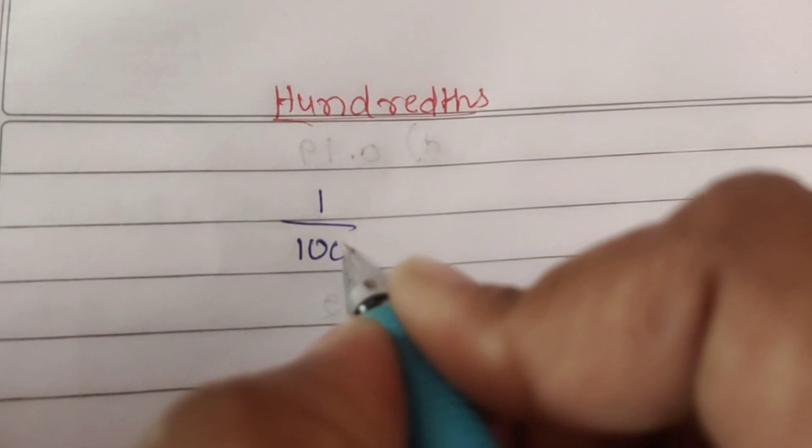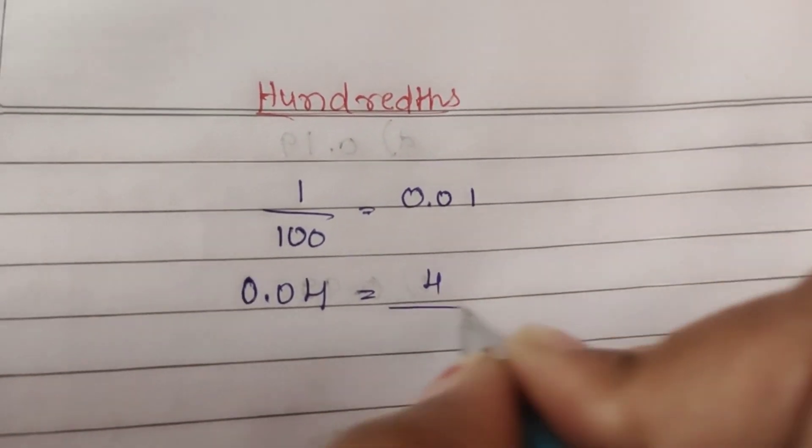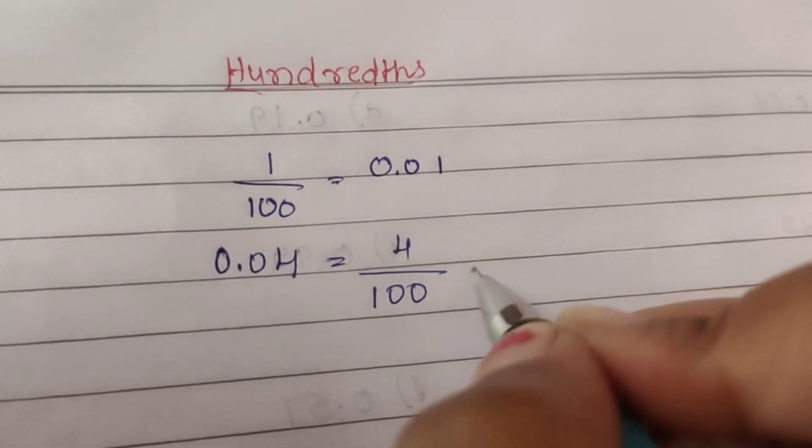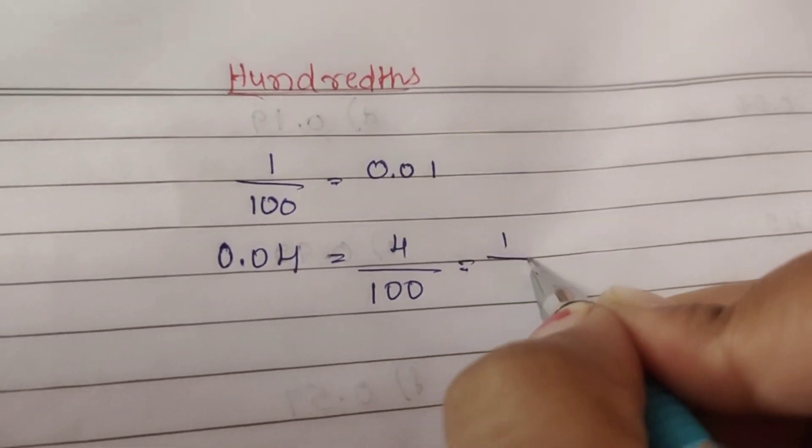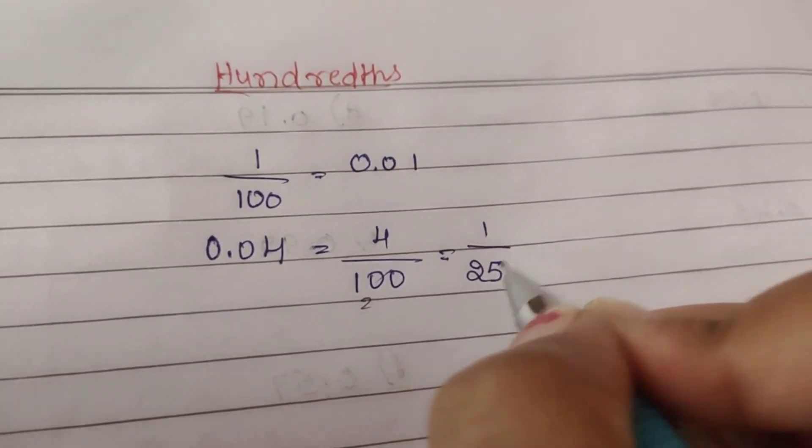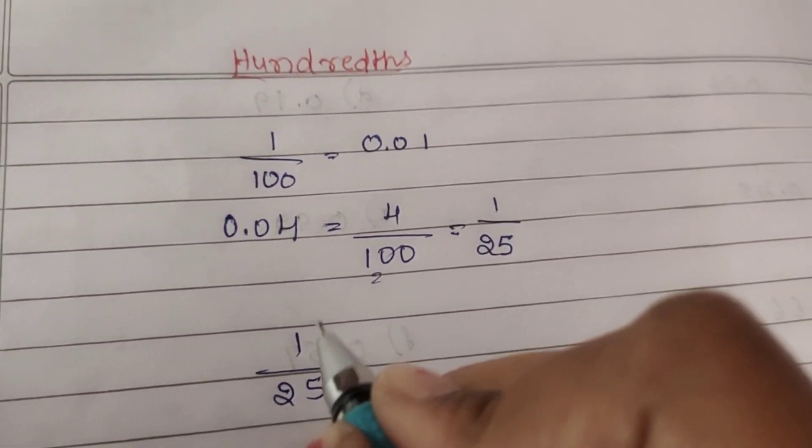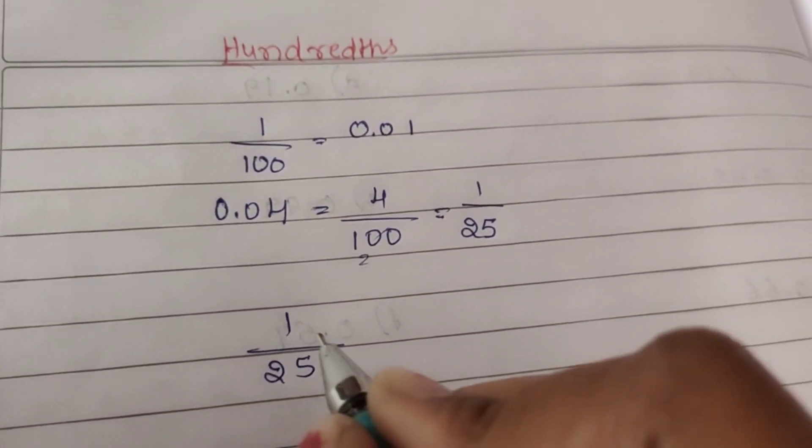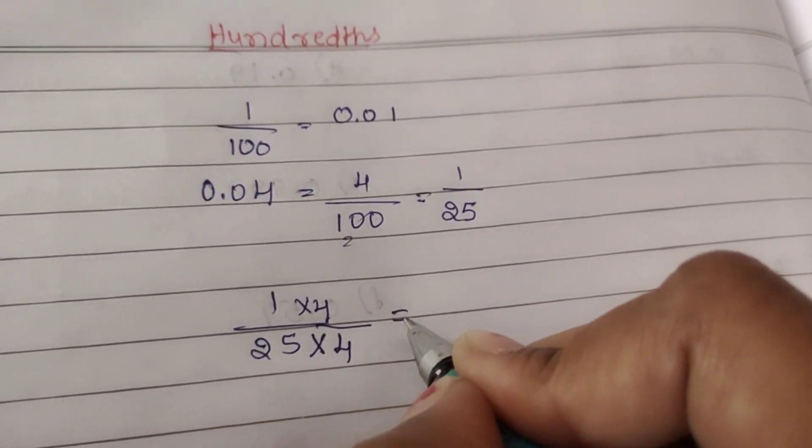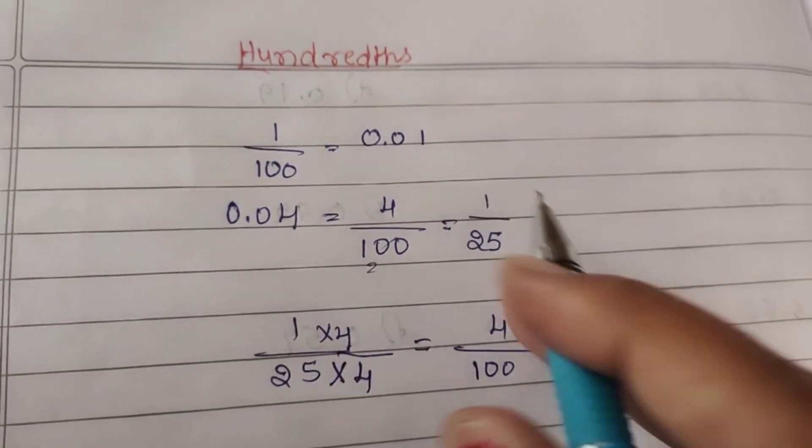Hundredths means 1 by 100, written in decimal form as 0.01. For example, 0.04 in fractional form is 4 by 100. As explained last class, two digits after the decimal point means divide by hundred. To write this in lowest form, divide both by four: four twos are eight, so one by twenty-five is the lowest form. To convert 1 by 25 back to decimal form, multiply by four: 25 fours are 100, giving 0.04.